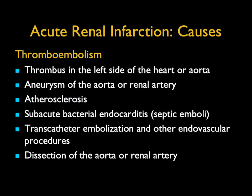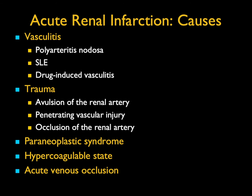Moving from inflammatory to vascular, we think about infarction. Renal infarction can be due to many things — typically thromboembolism, thrombus in the left side of the heart, aneurysm of the aorta or renal arteries, atherosclerosis, SBE, transcatheter embolization or other vascular procedures, and dissection of the aorta or renal artery. We also consider vasculitis — polyarteritis nodosa, lupus, and drug-induced vasculitis. Trauma including avulsion of the renal artery, penetrating vascular injury, or arterial occlusion. Paraneoplastic syndromes, hypercoagulability states, and venous occlusion are all very important.